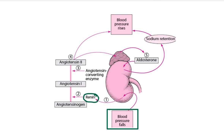The renin acts on angiotensinogen and converts it into angiotensin 1. Angiotensinogen is preformed in the liver and is always present in the blood. When angiotensin 1 travels through the lungs, it encounters the angiotensin-converting enzyme (ACE), which is present in the endothelial cells of the lung's blood vessels.